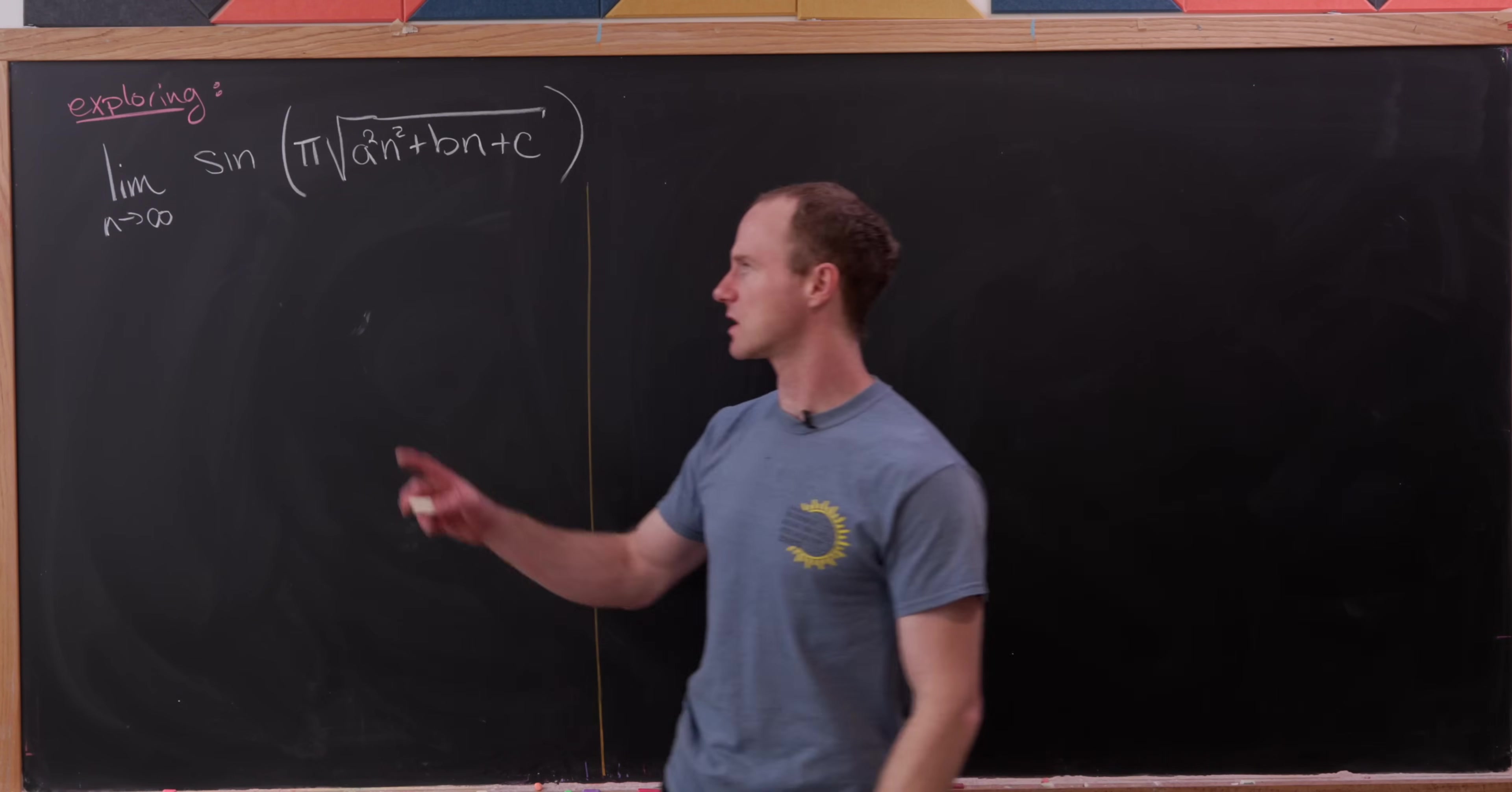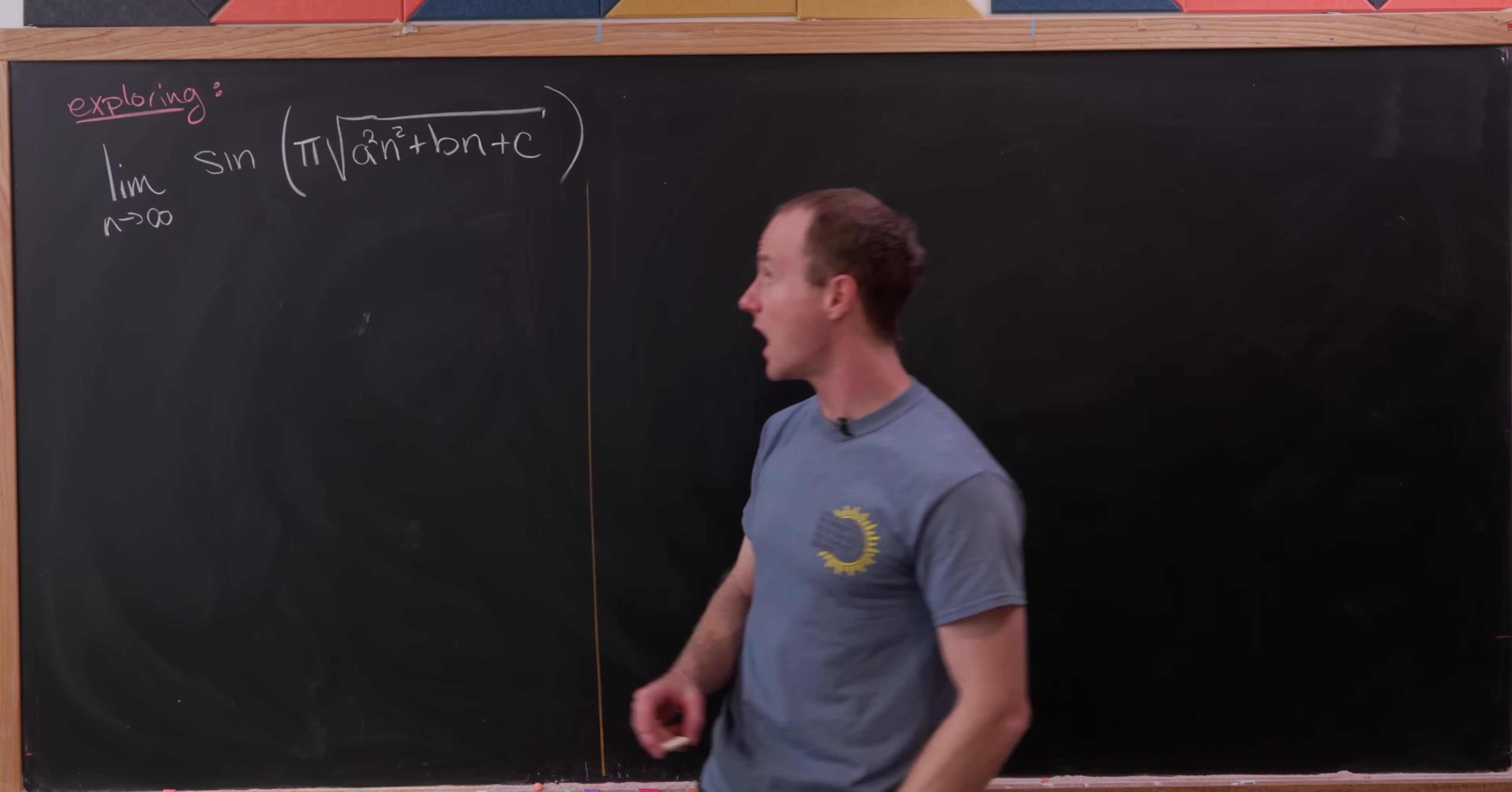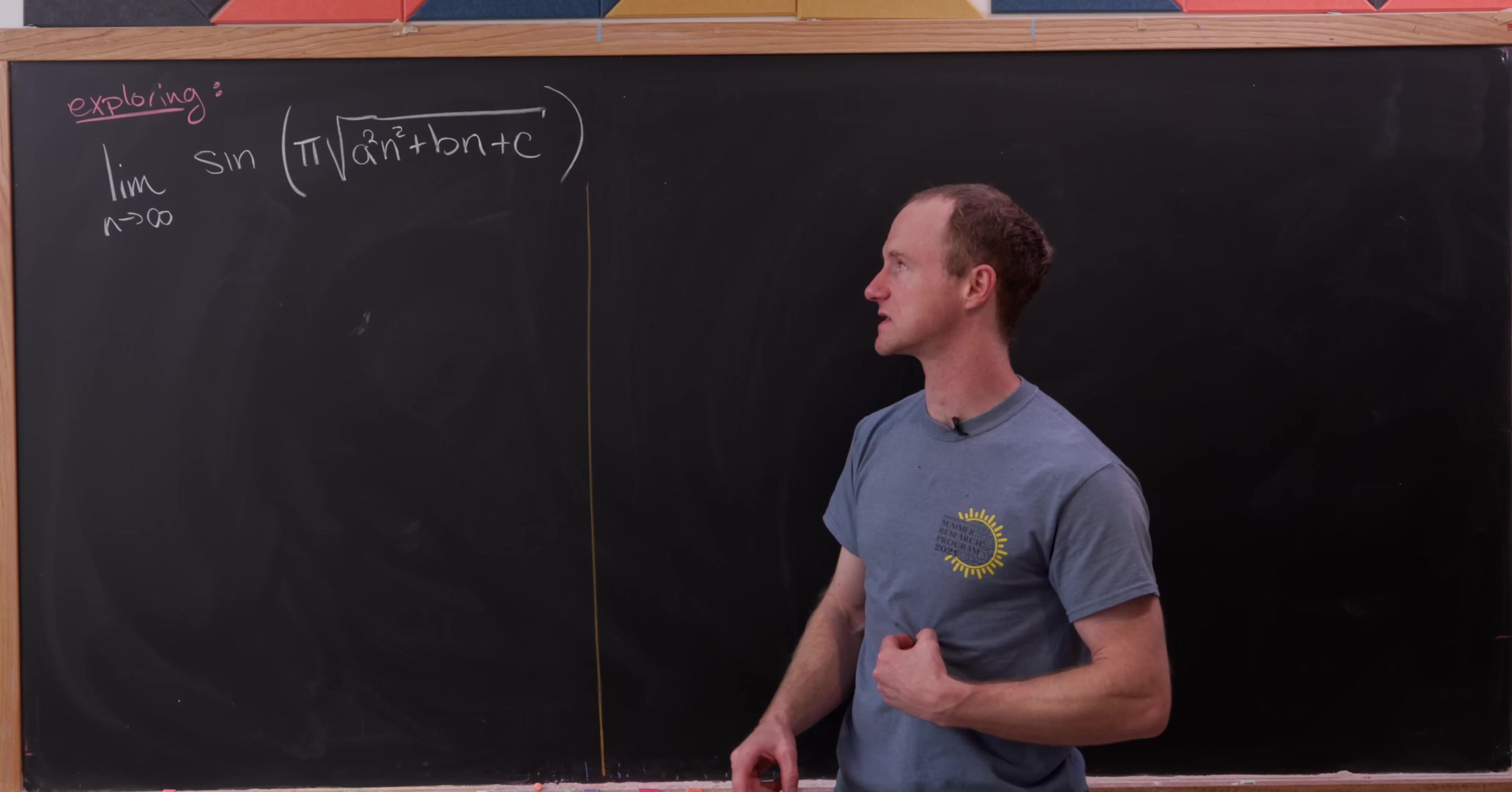So in particular, we're going to look at limits of this form: the limit as n goes to infinity of sine of π times the square root of a²n² plus bn plus c.